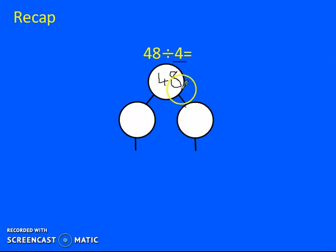So we need to partition it first. So we can partition it as 40 and 8. So 40 divided by 4 equals 10. And 8 divided by 4 equals 2. Add those both together, it equals 12. So 48 divided by 4 equals 12.